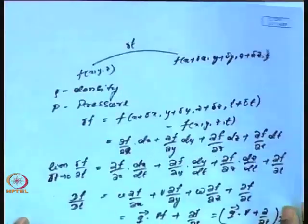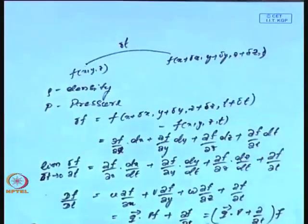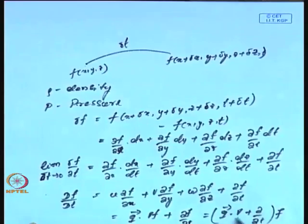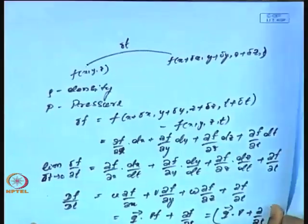This is the total derivative. The term ∂f/∂t is called the local derivative, and the term q̄·∇f is called the convective derivative.